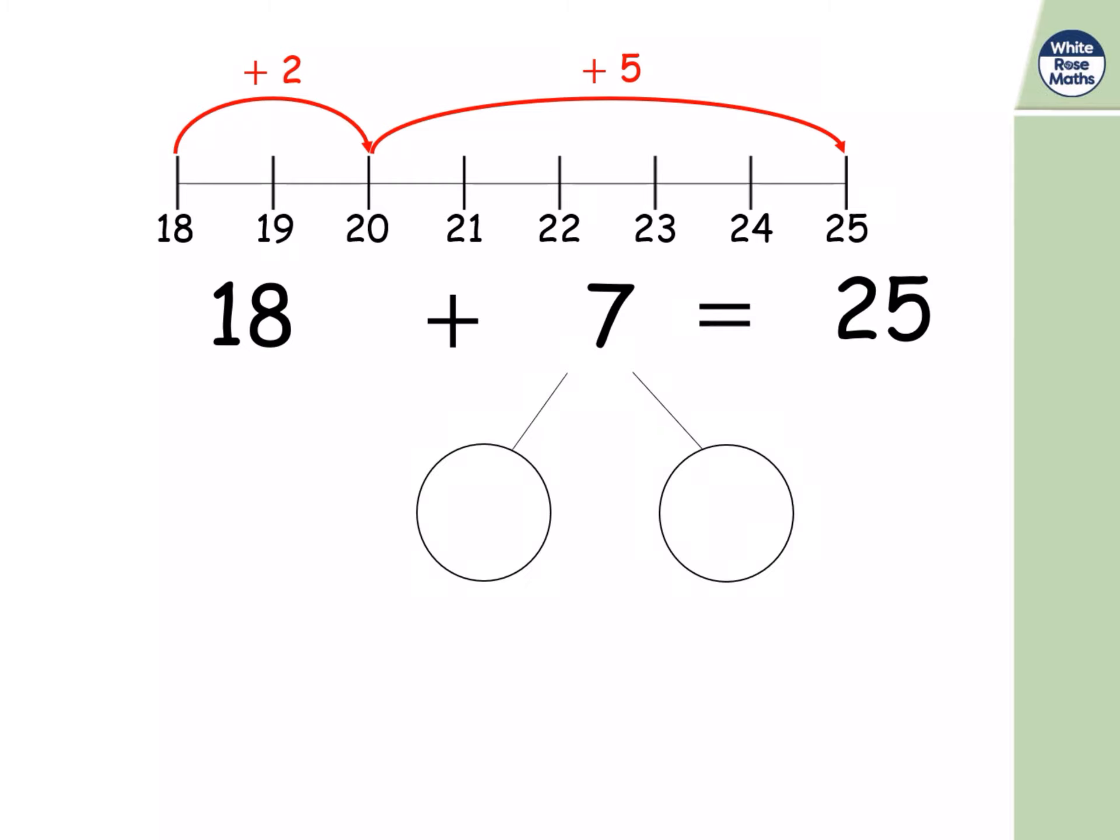And this is where the partitioning comes in. What I've done is partition the seven into two and five. And now eighteen and two have bonded together to make twenty. And then we have the jump of five to make twenty plus five, which is a much easier calculation than eighteen plus seven. Both calculations equal twenty-five.